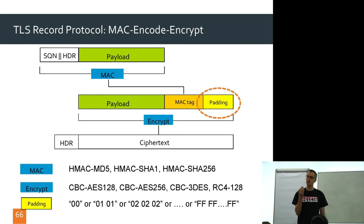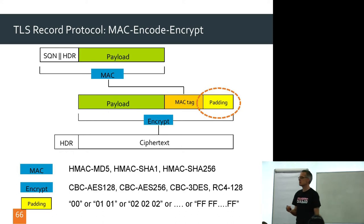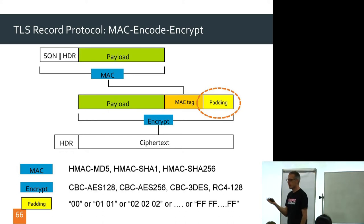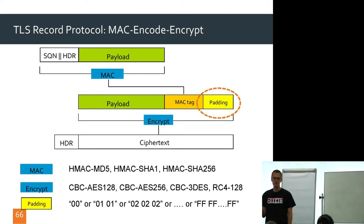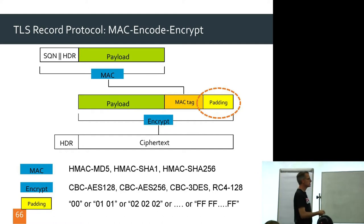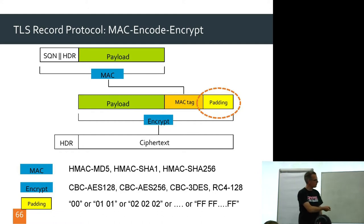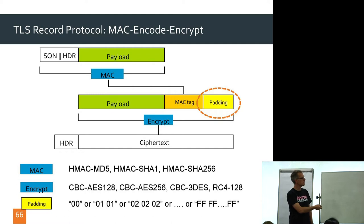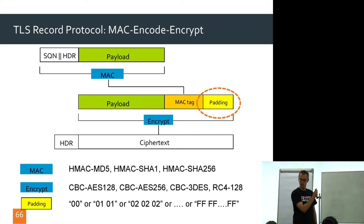And then we encrypt this using CBC mode. It doesn't matter whether we have chained initialization vectors or truly random initialization vectors — it doesn't make any difference. We saw that the padding has to be one of these patterns: 0, 0, 1, 0, 1, all the way up to FF, FF — 256 copies of FF.